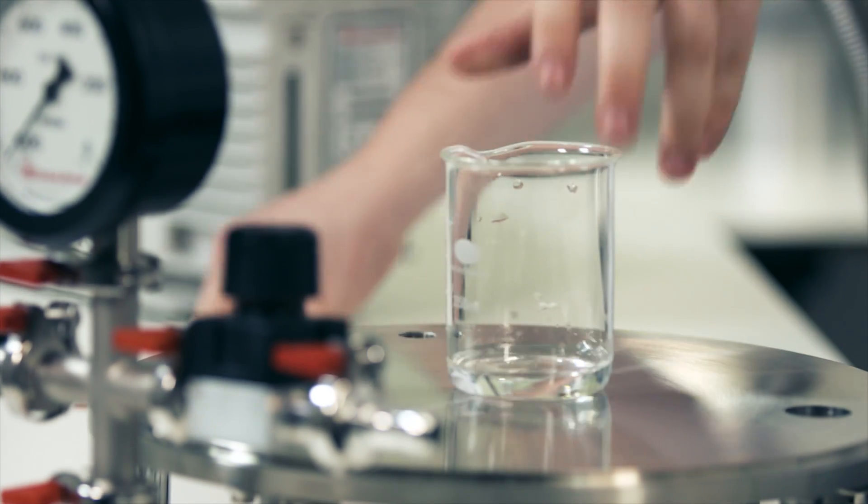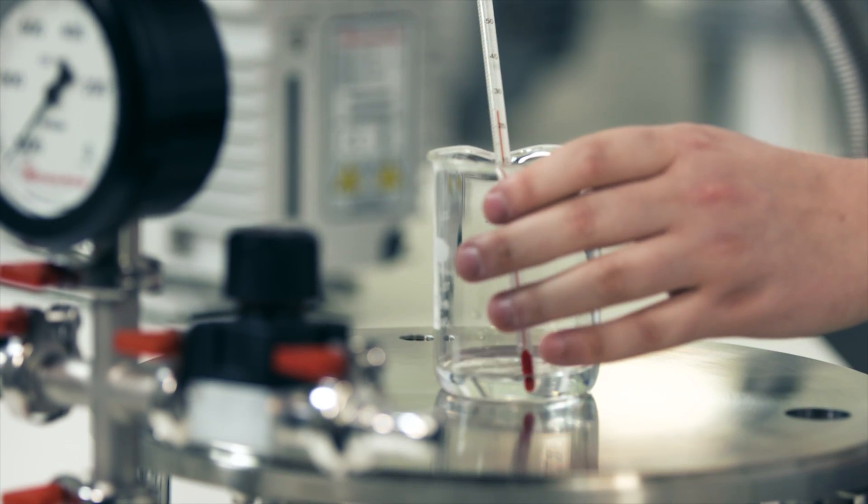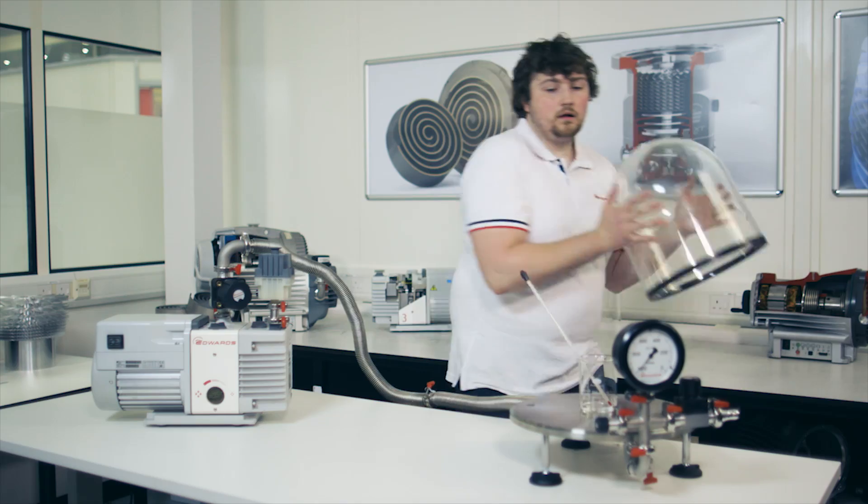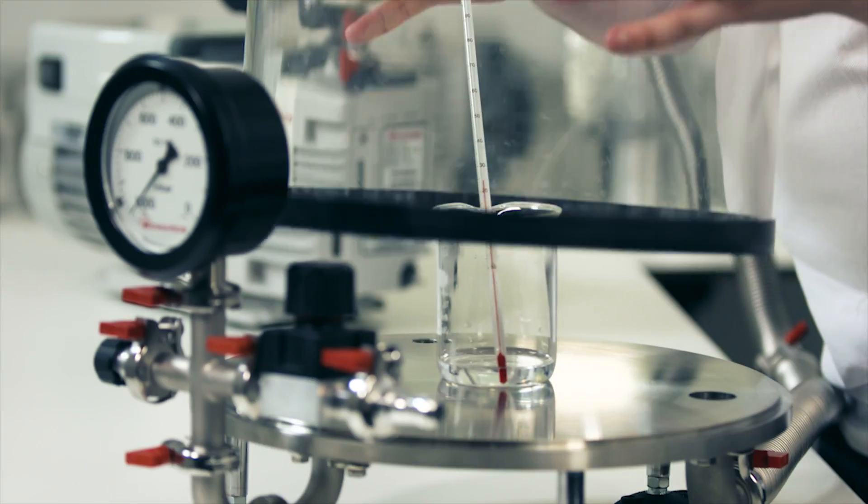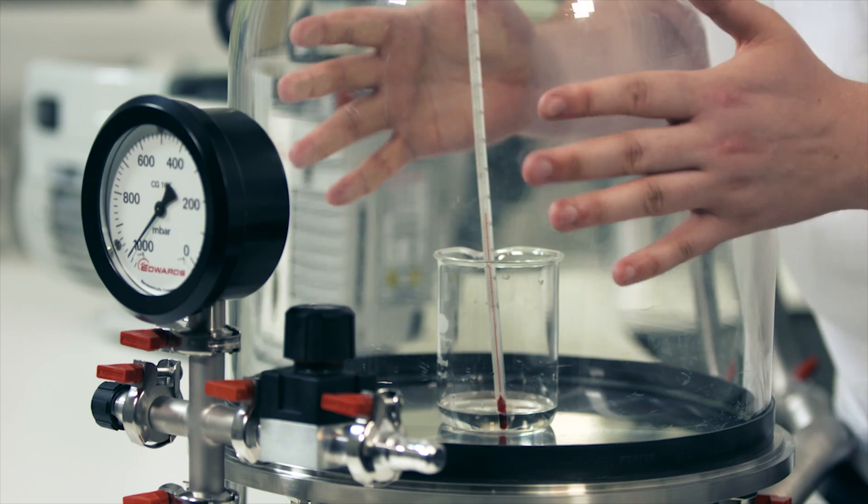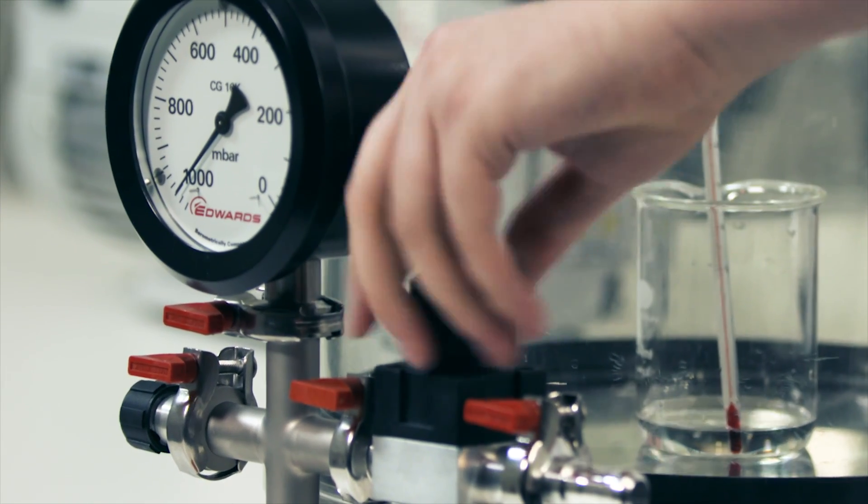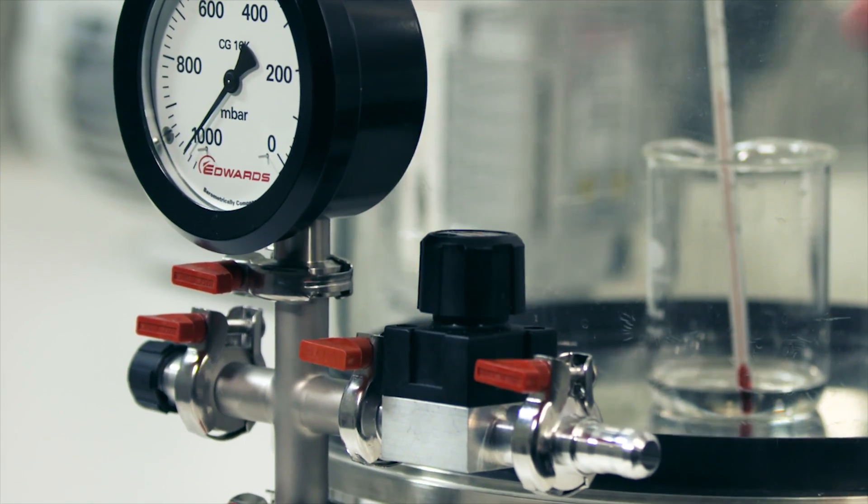I'm going to place our beaker of water into the bell jar, close up the bell jar again, and now close this valve to isolate the chamber so the air can't get in, and I'm going to open this one to let the air out.